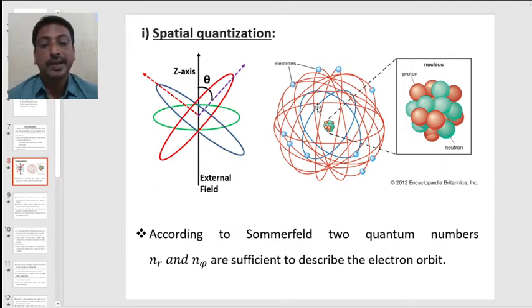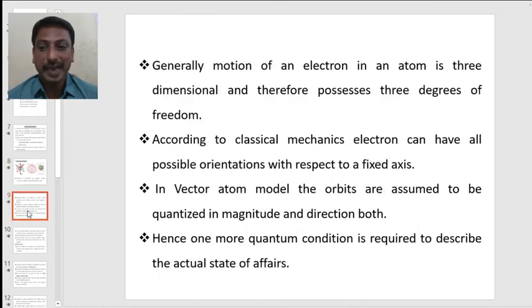Here you can see that we are also having circular as well as elliptical orbits where the electron is revolving around the nucleus and it is very interesting to note here that there will be no collision between any two electrons while precessing around the atom. According to Sommerfeld, two quantum numbers nr and nφ are sufficient to describe the motion of an electron in its orbit.